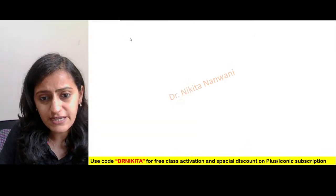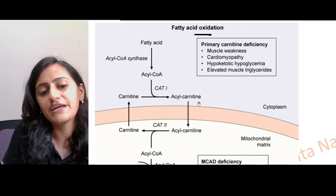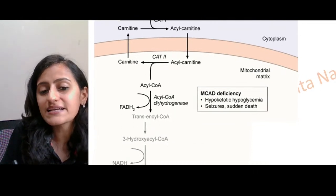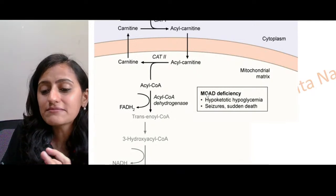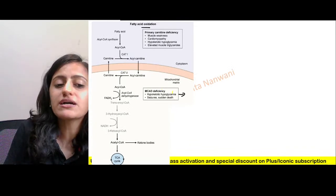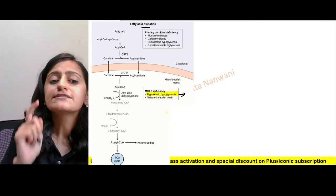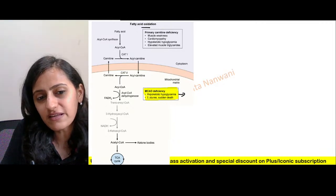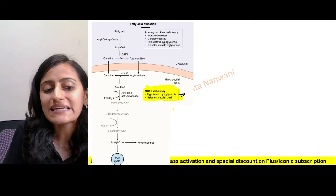Looking at the fatty acid oxidation pathway: fatty acid goes through carnitine transport, then acyl-CoA dehydrogenase acts. The diagnosis here is MCAD — medium-chain acyl-CoA dehydrogenase deficiency. The terminology to remember is hypoketotic hypoglycemia: during fasting, glucose goes down and ketone bodies are also not formed. This can lead to seizures and sudden death. This is a very important learning point — MCAD deficiency presents with hypoketotic hypoglycemia.